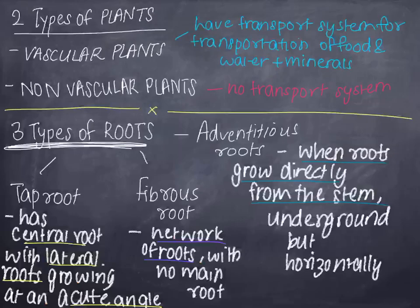The first thing you need to know is the two types of plants. There are vascular plants and non-vascular plants. Vascular plants have transportation systems in them, so these plants are able to transport water and minerals as well as food to other parts of the plant. Non-vascular plants do not have any transportation system, so they rely on other modes to transport food, water, or minerals to other parts of the plant.